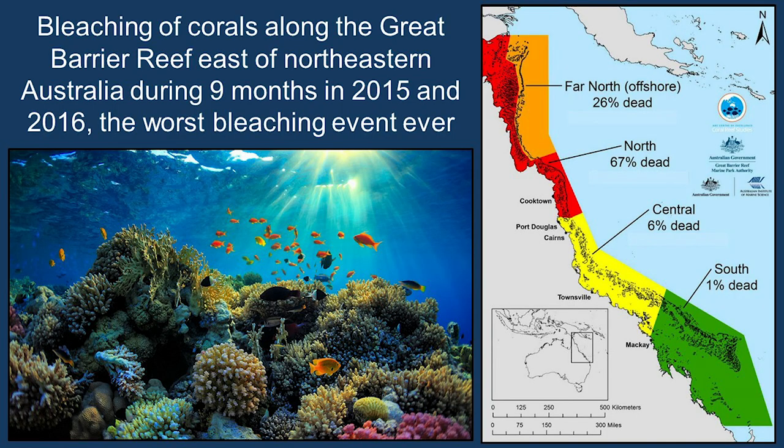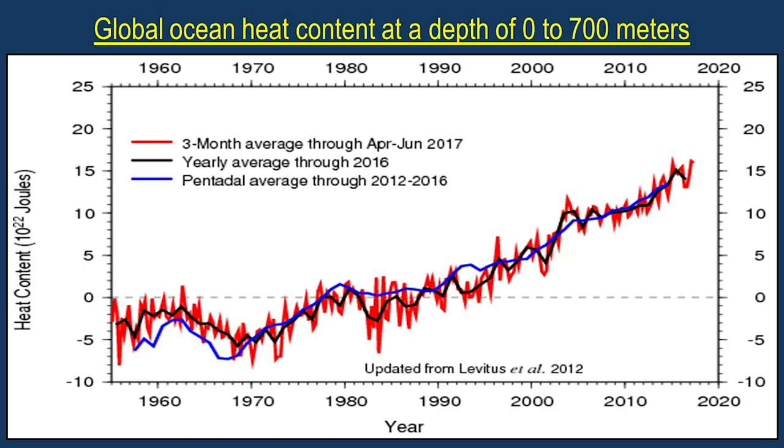Ultraviolet B radiation has enough energy to penetrate oceans to hundreds of feet, so that it sunburns life forms such as those that make up plankton and those that inhabit coral reefs. Bleaching of coral reefs is more likely due to sunburn than to changes in water temperature, because temperature of water changes very slowly. Because ultraviolet energy penetrates oceans so deeply, increases in ultraviolet radiation warm oceans very efficiently, raising ocean heat content as is clearly observed.